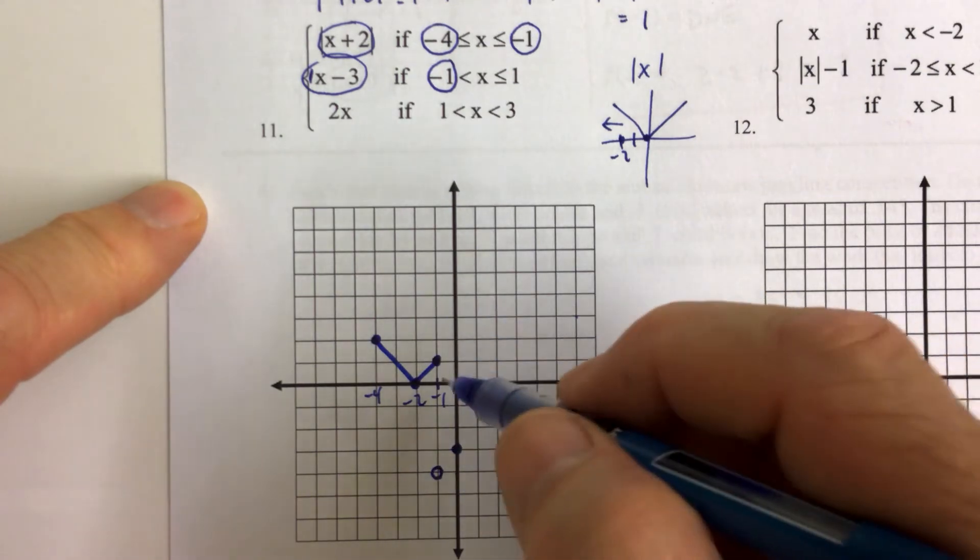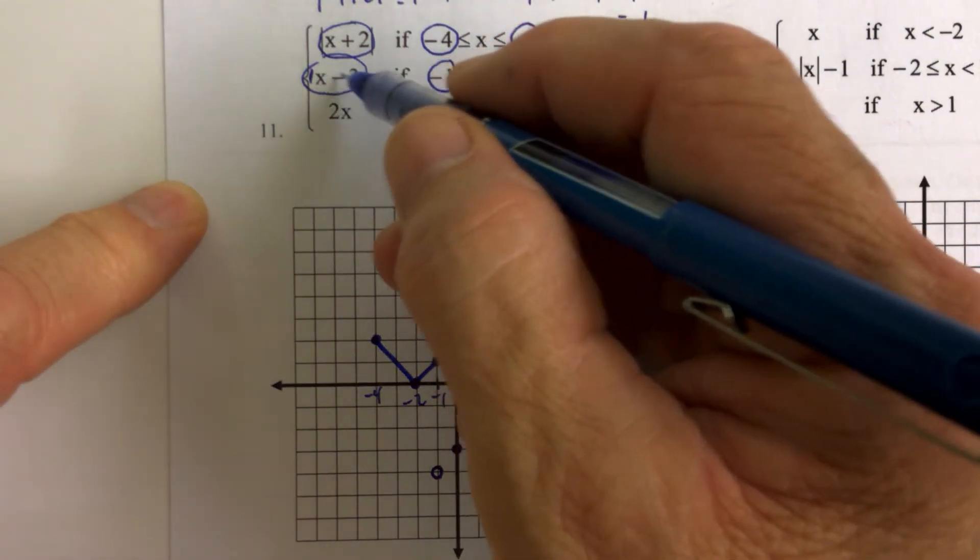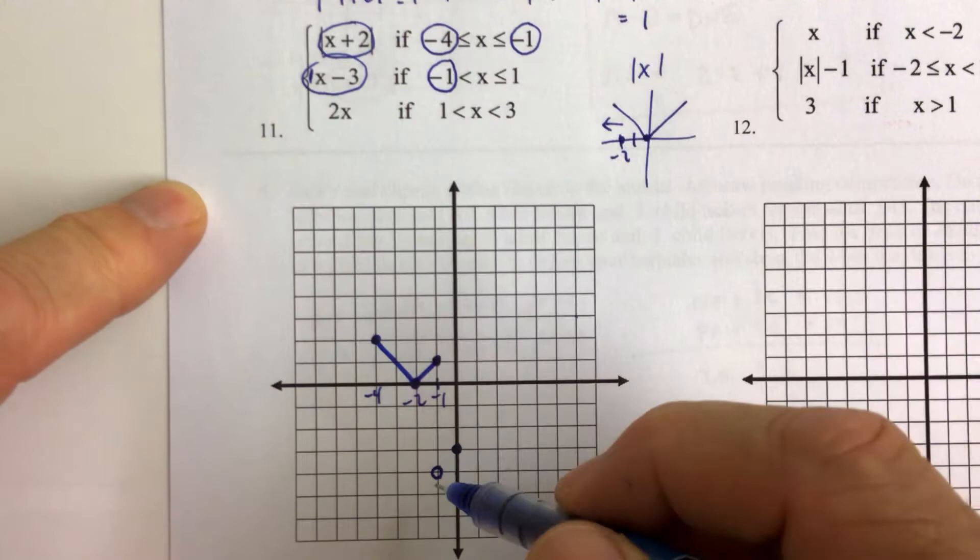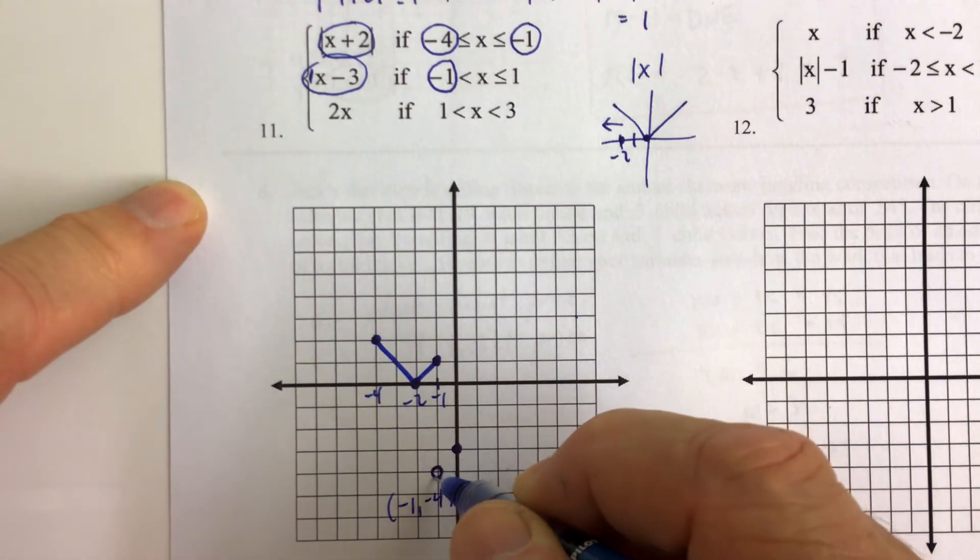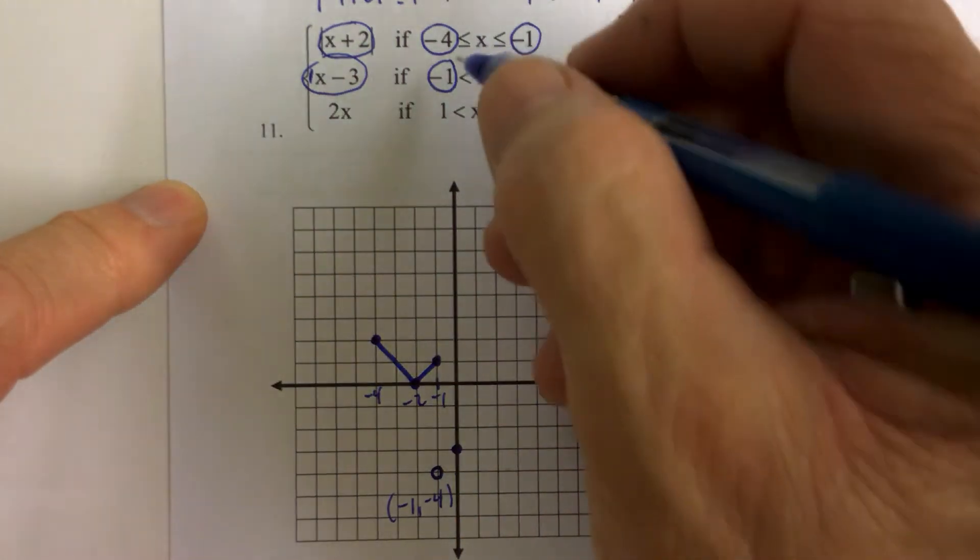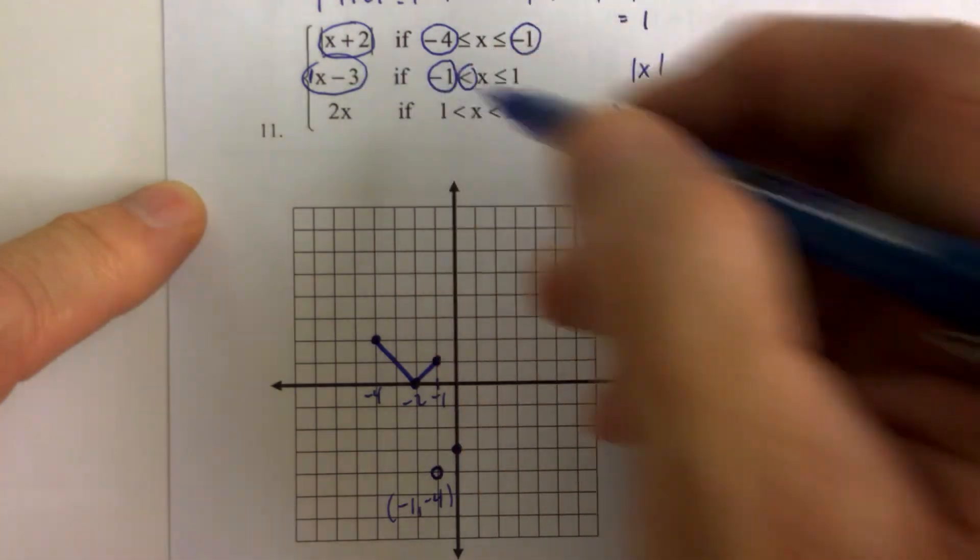Or, when x is negative 1, if you replace x with negative 1 and subtract 3 from negative 1, you get negative 4. So we have this ordered pair, negative 1, negative 4, where there's an open circle there because it says x is greater than negative 1. And you're on this piece.